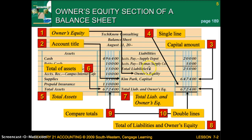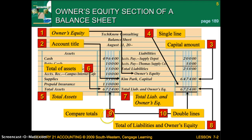The owner's equity section goes below the liabilities. You'll have your owner's equity account title, which would be your capital, and your amount. Then you'll have your total assets below your prepaid insurance, with a single line and your total assets. Then total liabilities and owner's equity — add up your liabilities and owner's equity, and these two numbers should match. You'll have double lines below.